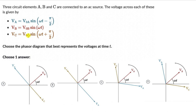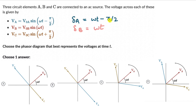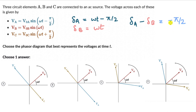We can start off with any two — let's start off with VA and VB. The phase of circuit element A is omega t minus pi by 2, and the phase of circuit element B is omega t. The phase difference between A and B — delta A minus delta B — comes out to be minus pi by 2. So this means that circuit element A is lagging behind circuit element B by pi by 2, because we have a minus sign.